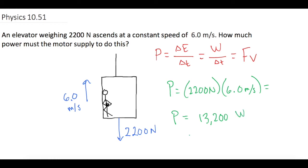But mastering physics wants kilowatts. So let's move it over three spaces. So we have 13.2 kilowatts. Rounded, of course, is 13 kilowatts.